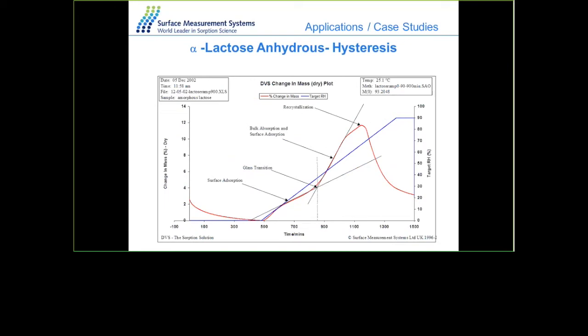Another method is the ramping method, where you ramp relative humidity at a particular rate — typically 5% per hour — and observe changes in the material. You see an increase in water absorption due to surface disruption, followed by slowing as the material transitions from a glassy to a rubbery state, then a sharper increase in uptake followed by a loss in water due to lowering of water capacity and recrystallization.